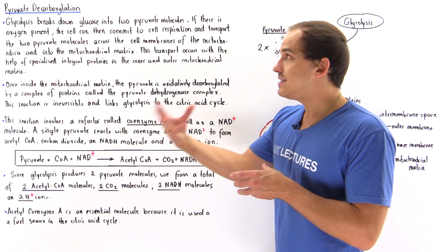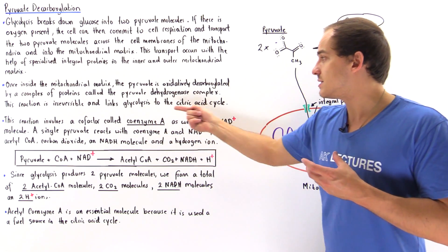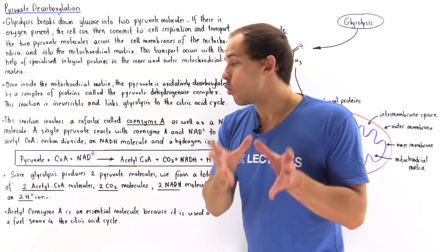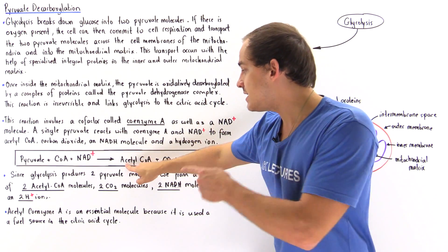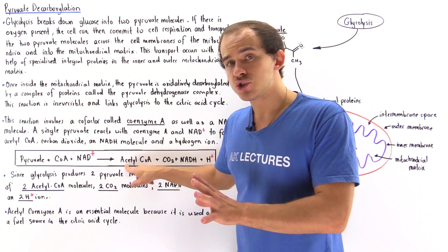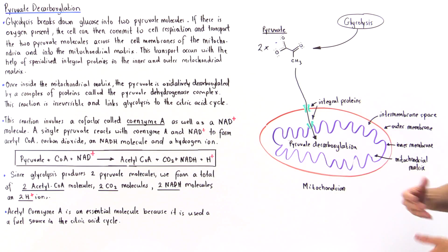Pyruvate decarboxylation is the link between glycolysis and the citric acid cycle, and it produces an important molecule known as acetyl coenzyme A that is used as the fuel source in the citric acid cycle.